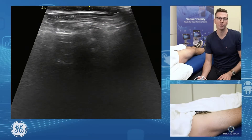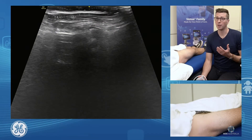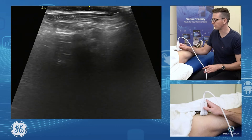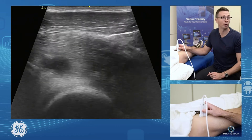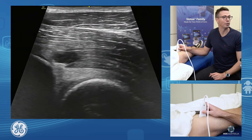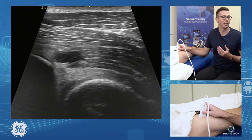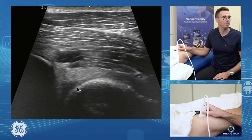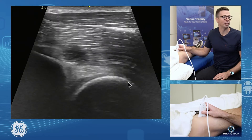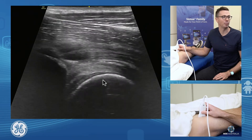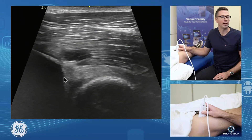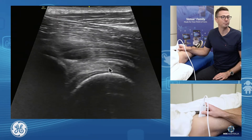Anterior Hip Joint Assessment. First of all, what we're going to do is assess the hip joint proper itself. We'll find the anterior hip, put our probe straight on the front and have a look. We'll identify our femoral head, we'll identify the anterior aspect of our acetabulum, and we'll see the front triangular shape of the anterior labrum.